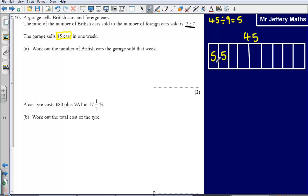So let's just count up to check that it does make 45. 5, 10, 15, 20, 25, 30, 35, 40, 45. So that works. So each part is worth 5 cars each.